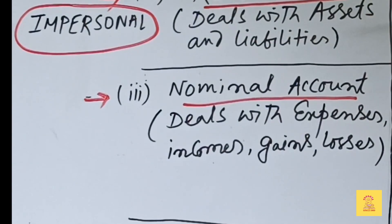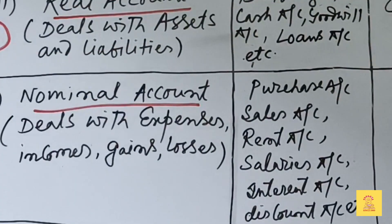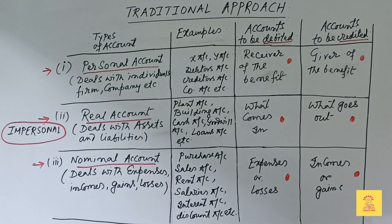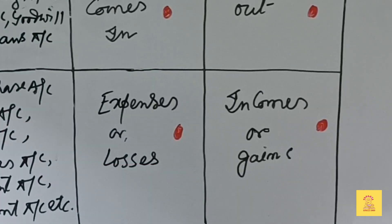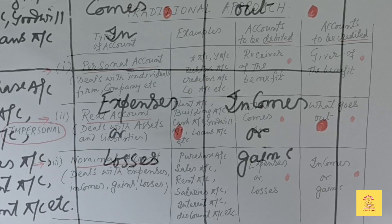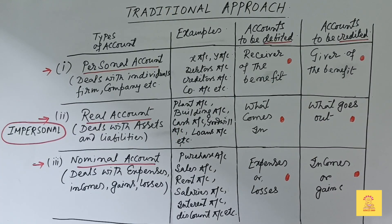Nominal account deals with expenses, incomes, gains, and losses. Examples include purchase account, sales account, rent account, salaries account, interest account, and discount account. The rule for nominal accounts is: expenses or losses are debited, and incomes or gains are credited. These are the golden rules of accounting under the traditional approach.